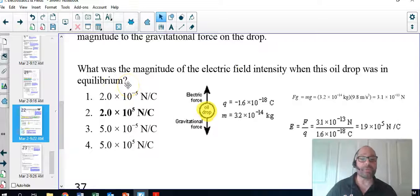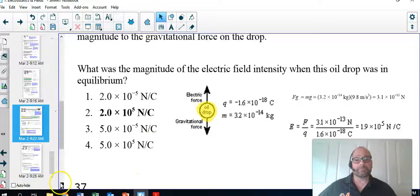slide. Well, what was the magnitude of the electric field intensity when this oil drop was in equilibrium? So this question basically wants to know what was the strength of the electric field. So you have the oil drop pointing down and the electric force is pointing up, and they're in balance with each other. The Q is given as negative